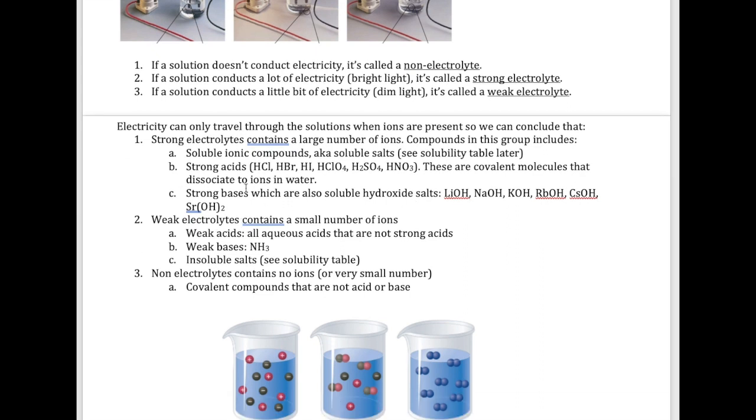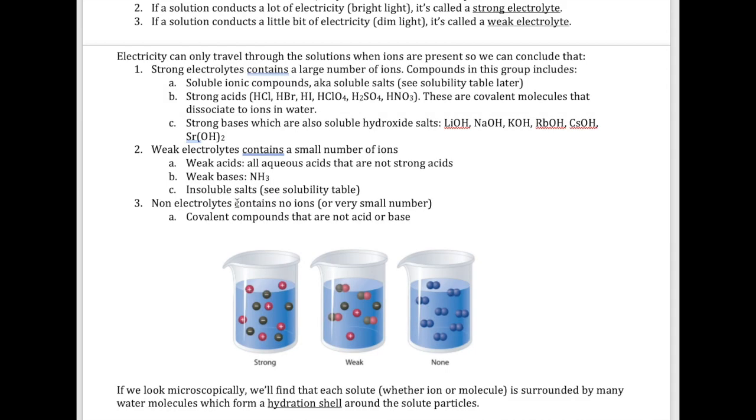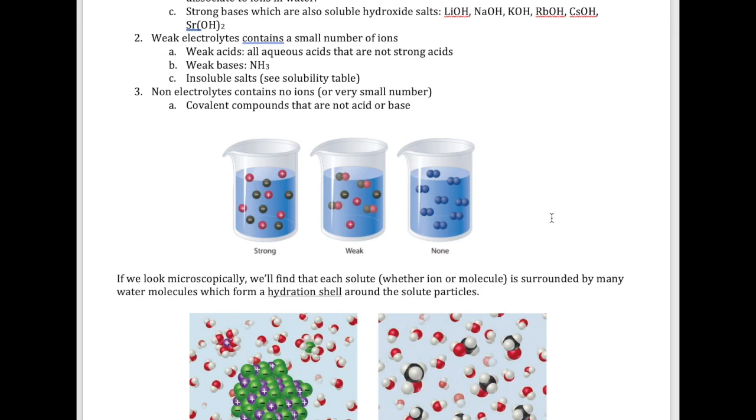Weak electrolytes are the weak versions of these compounds: insoluble salts, weak acids - any acids that are not one of these strong acids are considered weak acids - and weak bases. There's a bunch of them, but the one I really want you to remember is NH3 or ammonia. Non-electrolytes are compounds that cannot produce any ions. By definition, they have to be covalent compounds that are not either an acid or a base. Those covalent compounds like sugar will dissolve in water, meaning they will mix homogeneously with water, but they're not going to generate any ions.